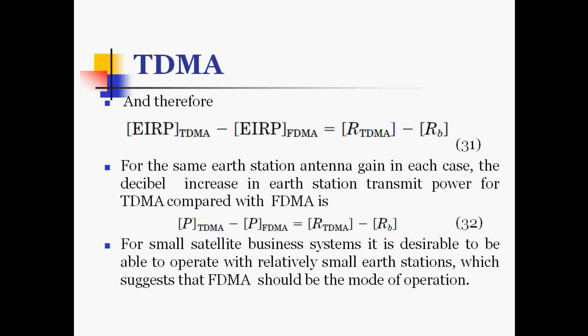Therefore, EIRP(TDMA) minus EIRP(FDMA) equals RTDMA minus RB (FDMA uplink). For the same earth station antenna gain, the decibel increase in earth station transmit power for TDMA compared with FDMA is P(TDMA) minus P(FDMA) equals RTDMA minus RB. For small satellite business systems, it is desirable to operate with relatively small earth stations, which suggests that FDMA should be the mode of operation.